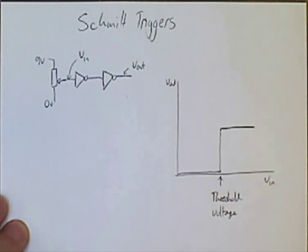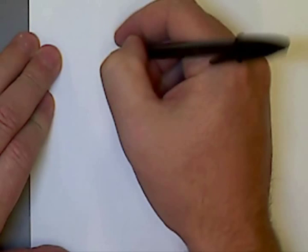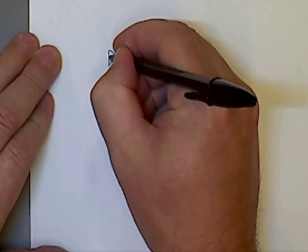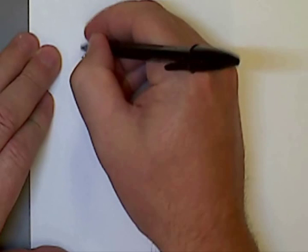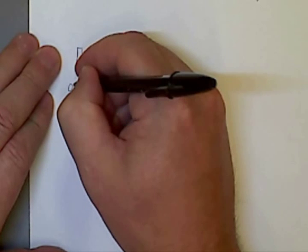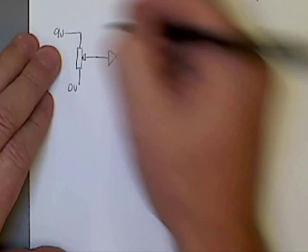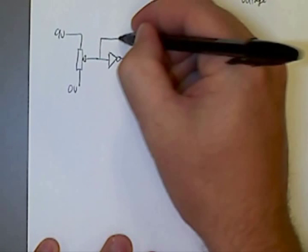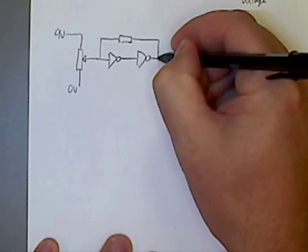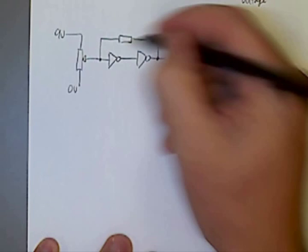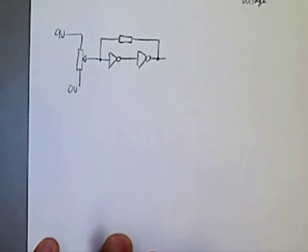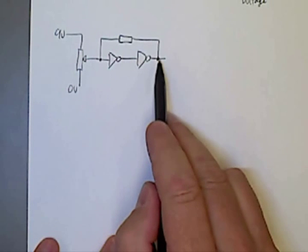If we were to modify our circuit slightly, so I'll redraw it. We've got our two inverters in series again, and the same potential I'm going to set up as before. However, now what I'm going to do is I'm going to connect the output of our circuit to the input of our circuit with a resistor. This is called feedback. The feedback in this circuit is taking some of the output and applying it to the input.